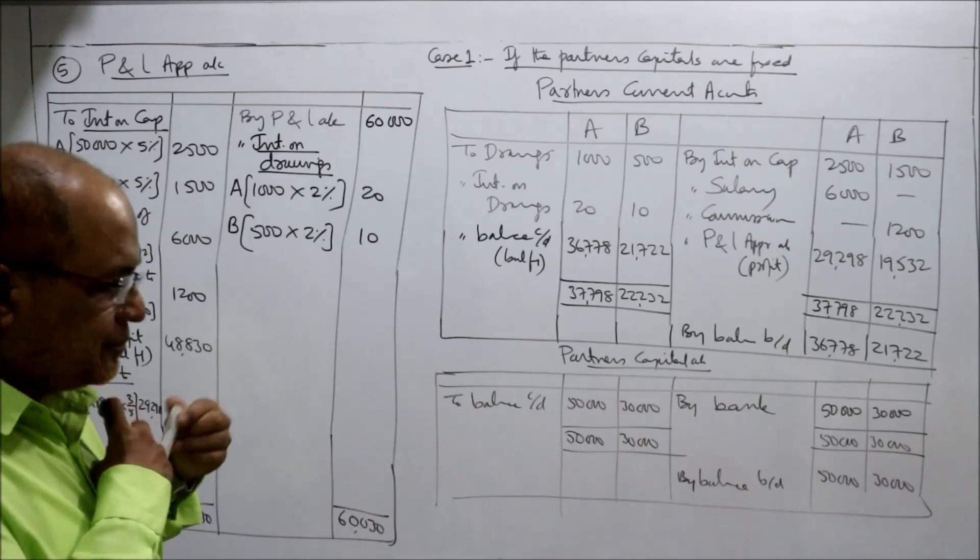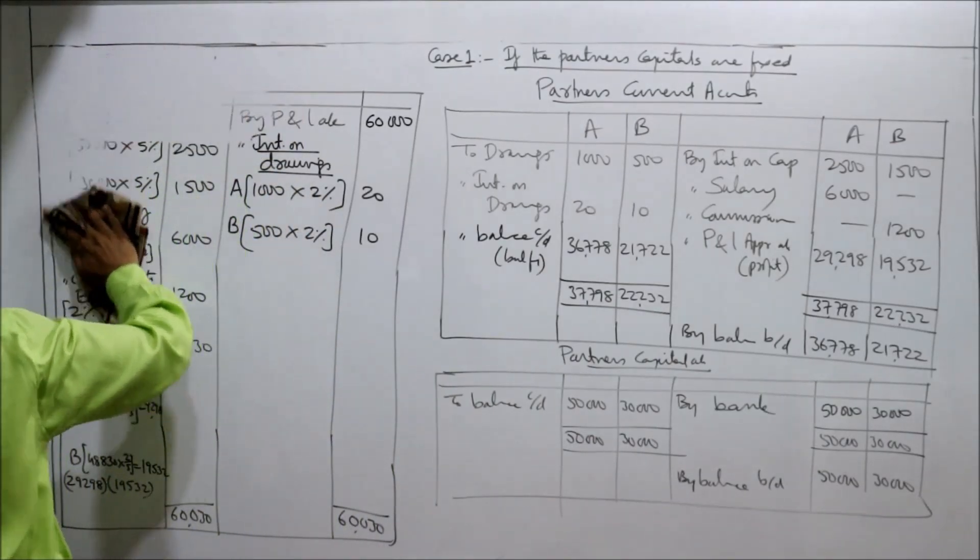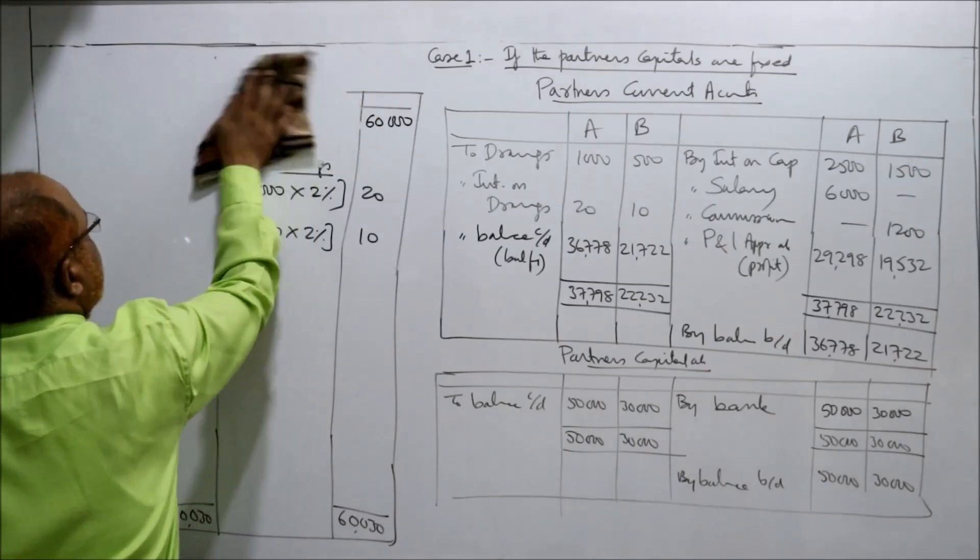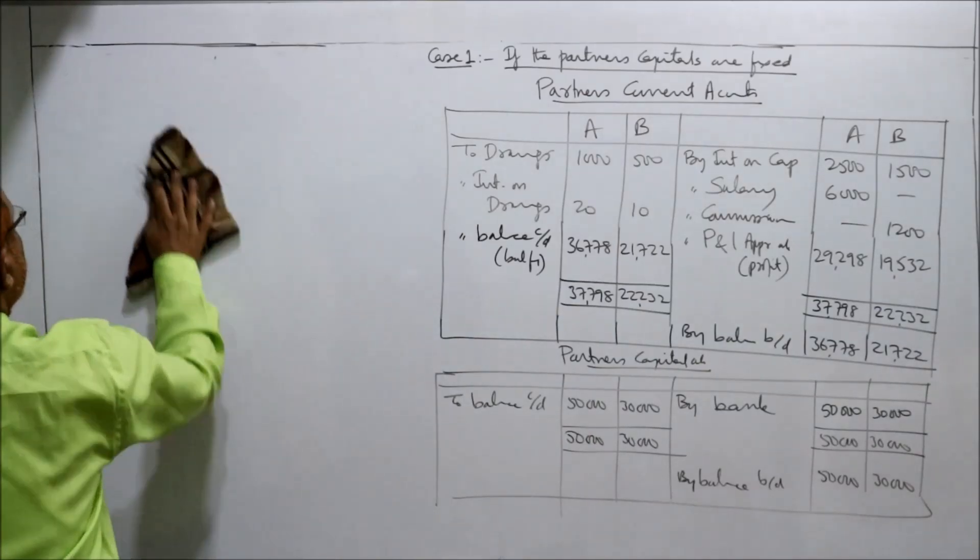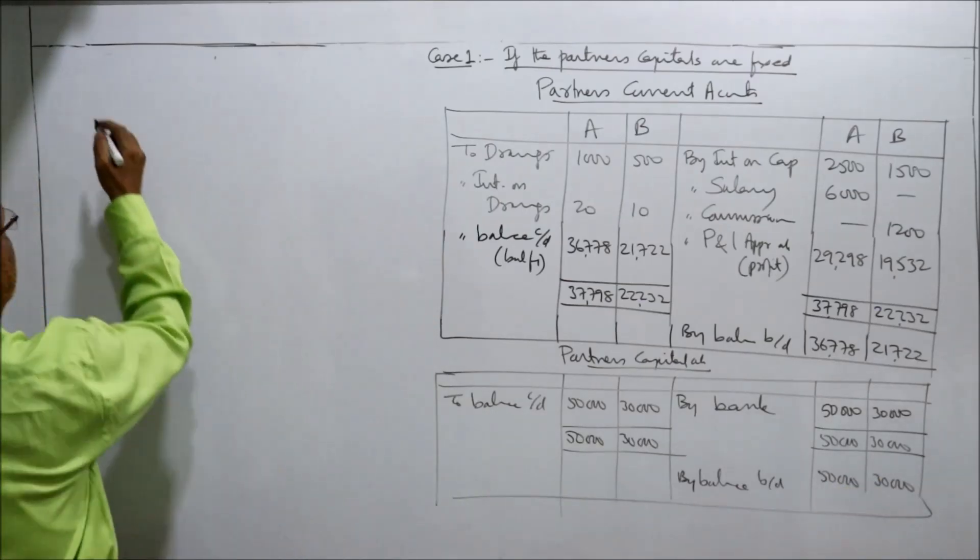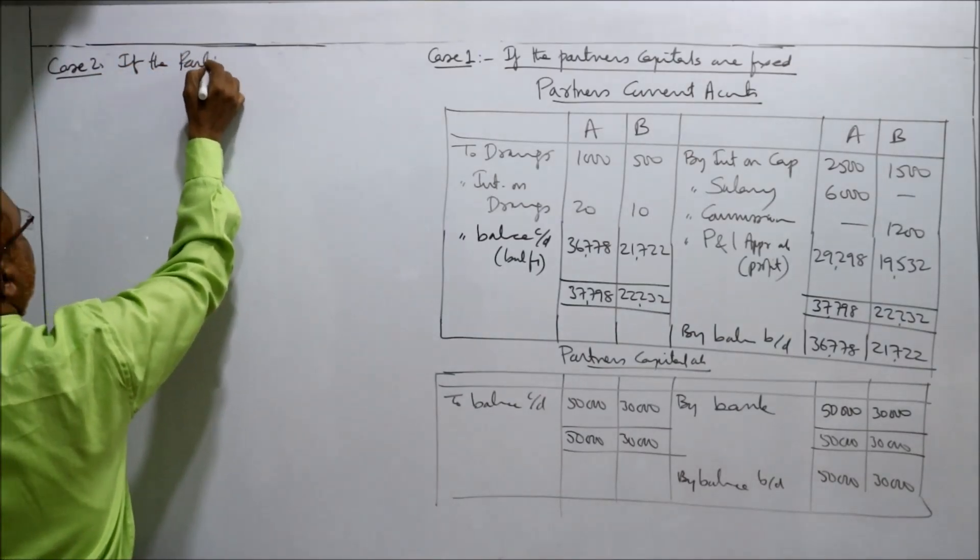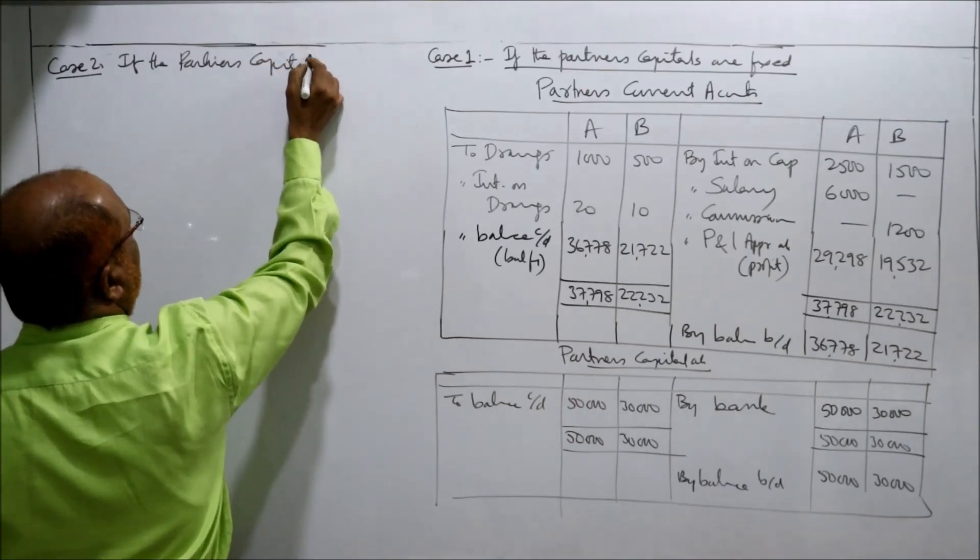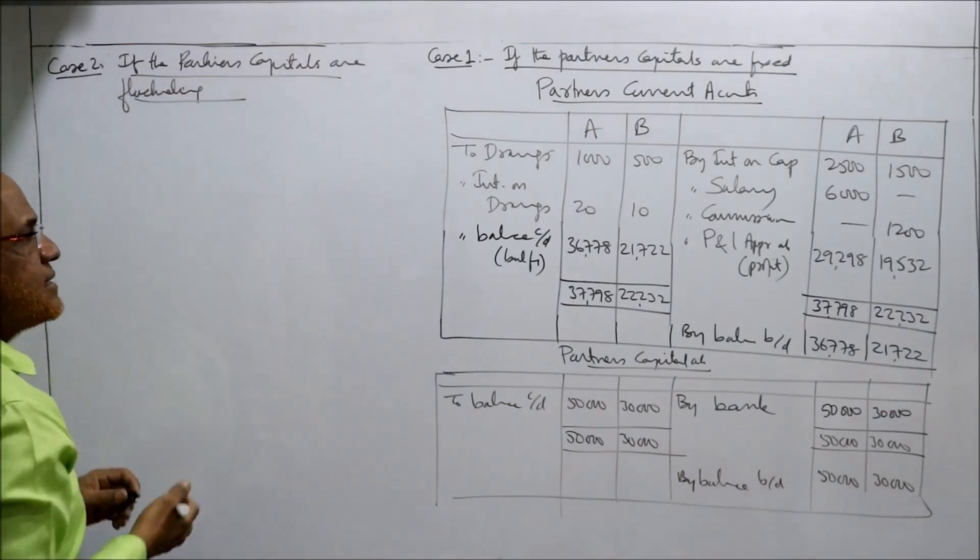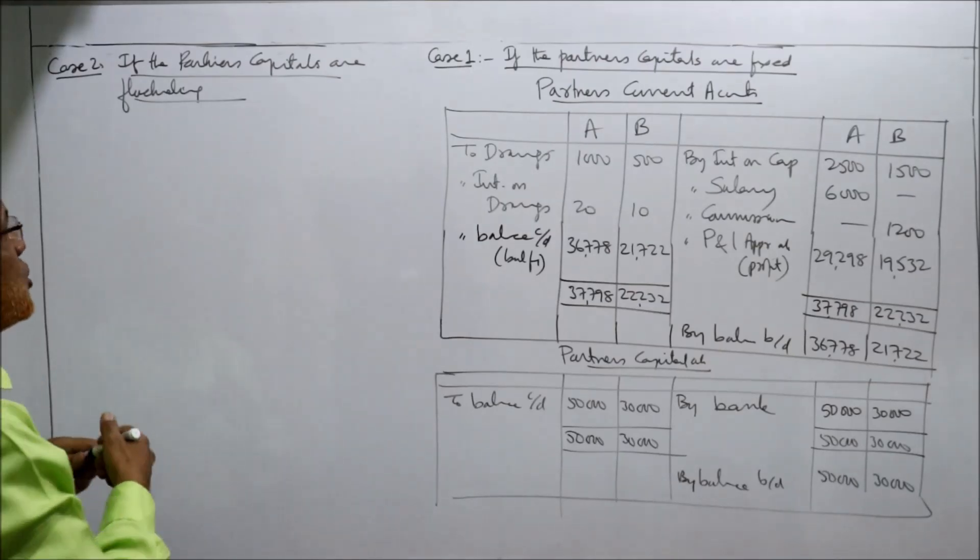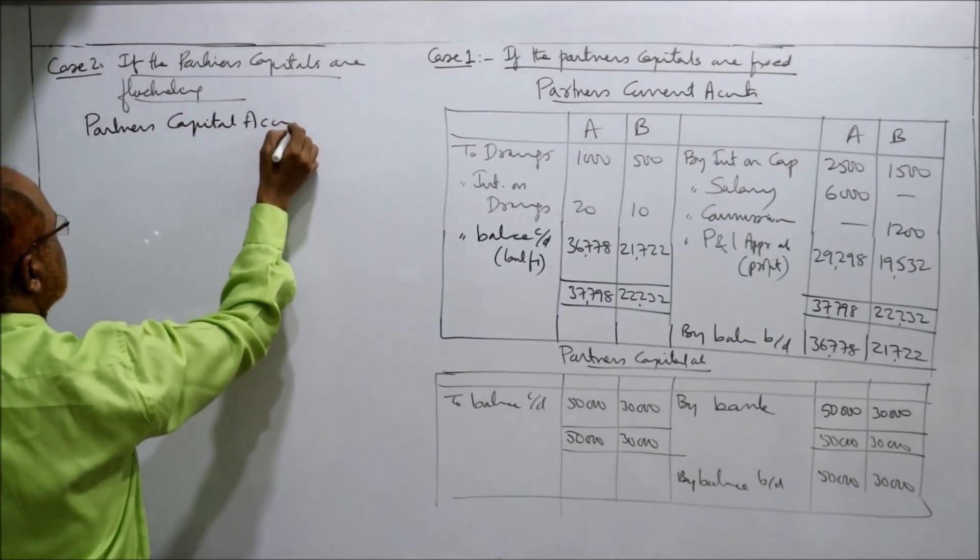After this, we have to make second case. Case two. If the partner's capitals are fluctuating. Only one account will be made. That is capital account, no current account.